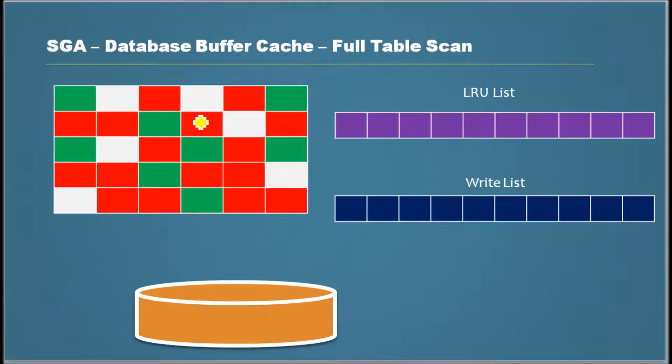So we saw that when data gets written to the database buffer cache, the blocks where the contents went into get stored here in the LRU list.